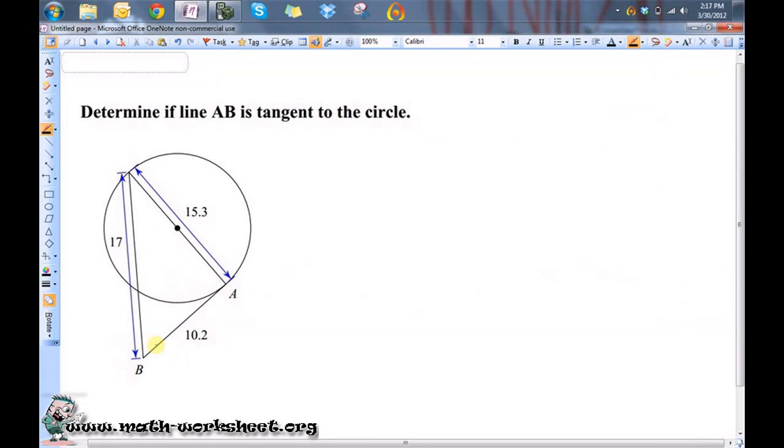If we wanted to determine if this line is tangent to the circle, that would mean that this would have to be a right angle here.